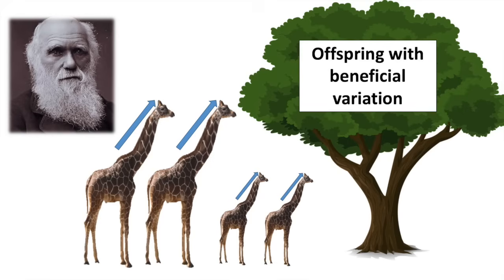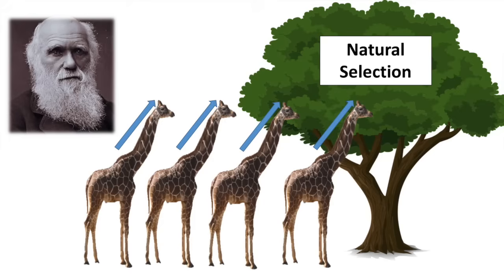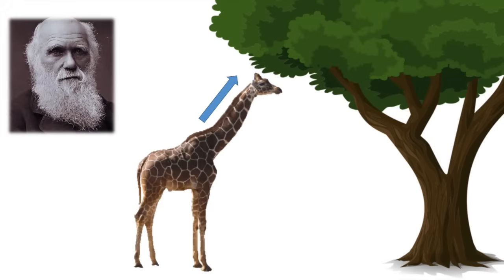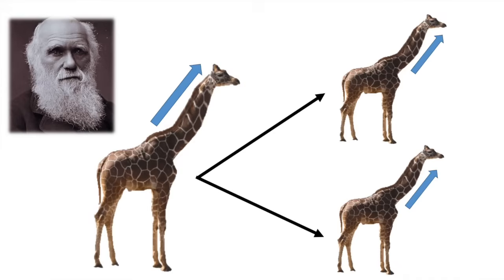This is called natural selection. When the long neck giraffes survive, they're going to breed and pass on the beneficial variation to their offspring. And when those offspring grow up, they're going to be able to feed on the taller trees, they'll survive, and they're going to pass on their beneficial variation to their offspring.